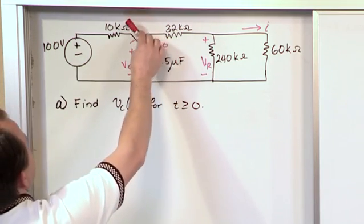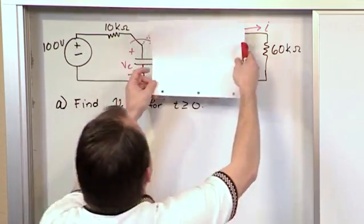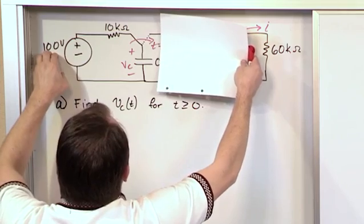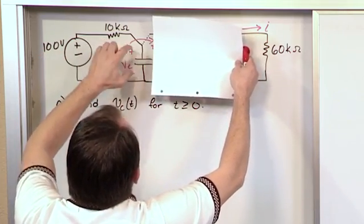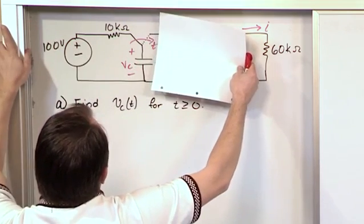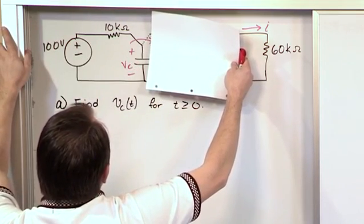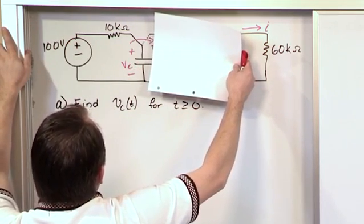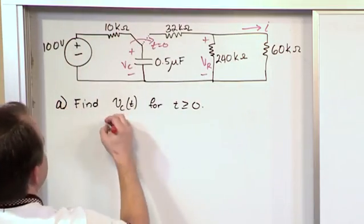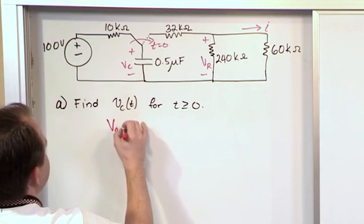So when the switch is in position A right here, in that case none of this stuff on the right-hand side of the circuit is even connected. All we have is a 100 volt source, a 10 kilo ohm resistor, and a capacitor. Let me ask you a question. What is the voltage across this capacitor in the initial state? And you should be able to answer that even without doing any calculations. The voltage across this capacitor initially, before the switch moves, is going to be 100 volts.